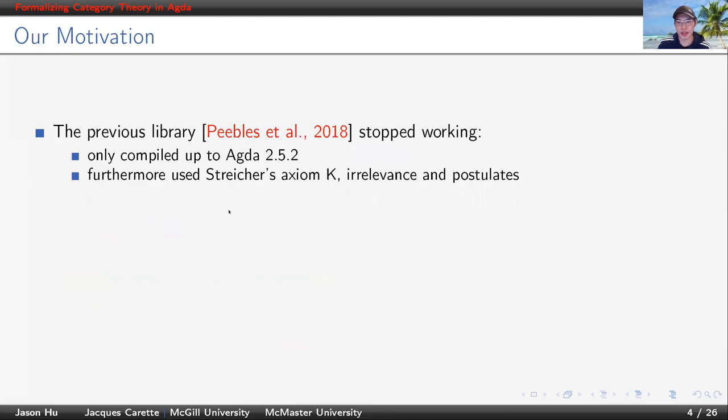Given a previous library existing in Agda, why do we implement yet another one? A good reason is that the previous library stopped working in Agda 2.5.2. And what's worse, it used some additional constructs, like strict K, irrelevance, and even some postulates.